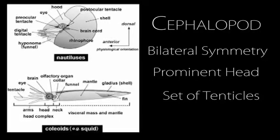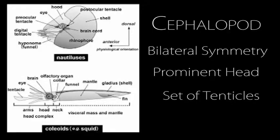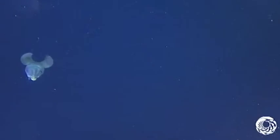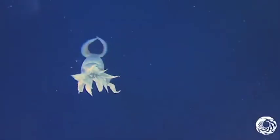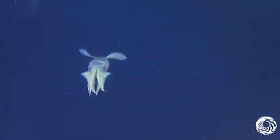Like all cephalopods, these exclusively marine animals are characterized by a bilateral body symmetry, a prominent head, and a set of arms or tentacles. Like most cephalopods, squids have advanced vision with large eyes on the side of their heads. They also have eight appendages, with two longer tentacles that are used for feeding and mating.